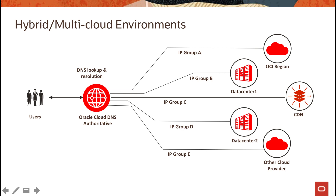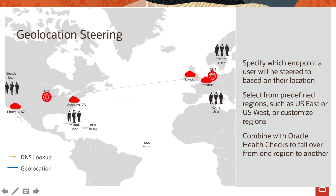We also commonly see use cases in hybrid or multi-cloud environments where you want to segregate your traffic based on the IP group of individual clients. You can do so using traffic management steering policies. A very common scenario is geolocation-based routing — for instance, you have an e-commerce site and for your European customers you want all traffic to go to your European sites.